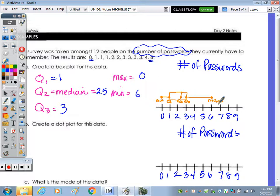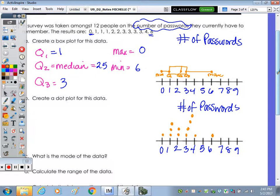The dot plot. We have 1, 0, so we put a dot. We have 3, 1's. 2, 2's. Try to make them so they line up nicely, horizontally. 4, 3's. 1, 4, and 1, 6. So those can actually be moved over.